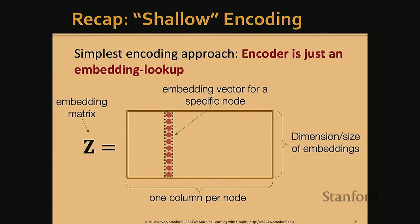For encoding, we've seen the simplest approach: the shallow encoder, or embedding lookup. In this approach, we have an embedding matrix where each column represents one node, and the embedding dimension is the size of the node embedding. To represent a node, we pick one column from the embedding matrix and use that vector as the node representation.